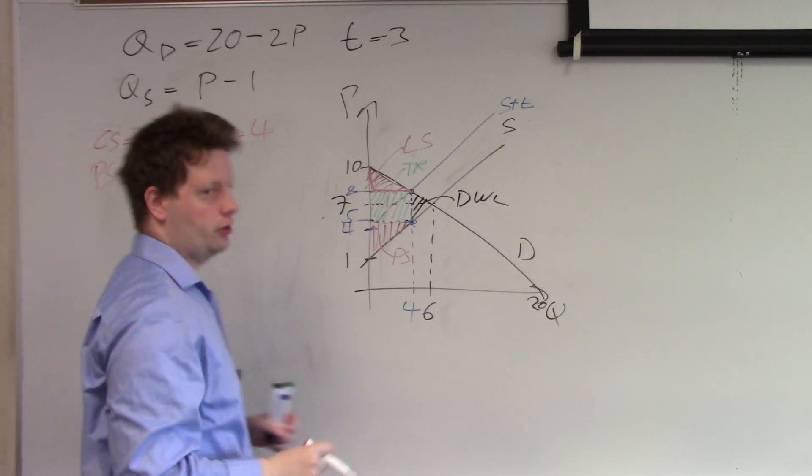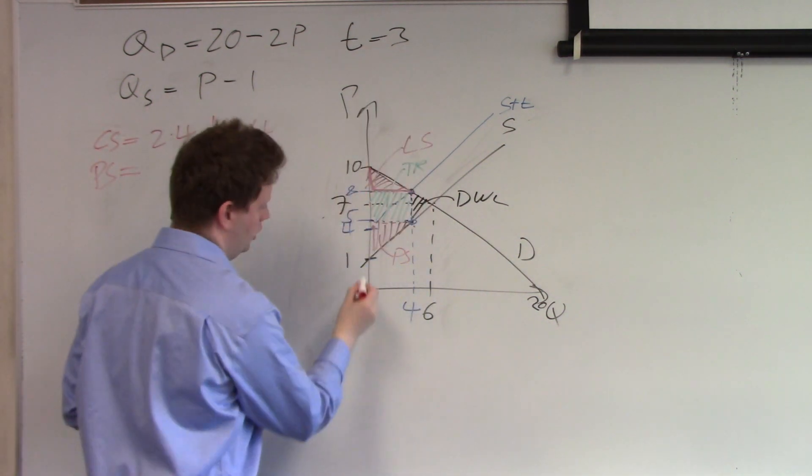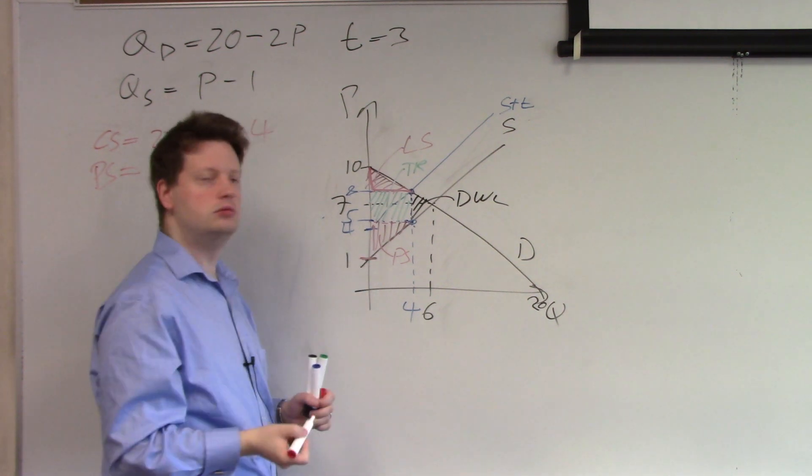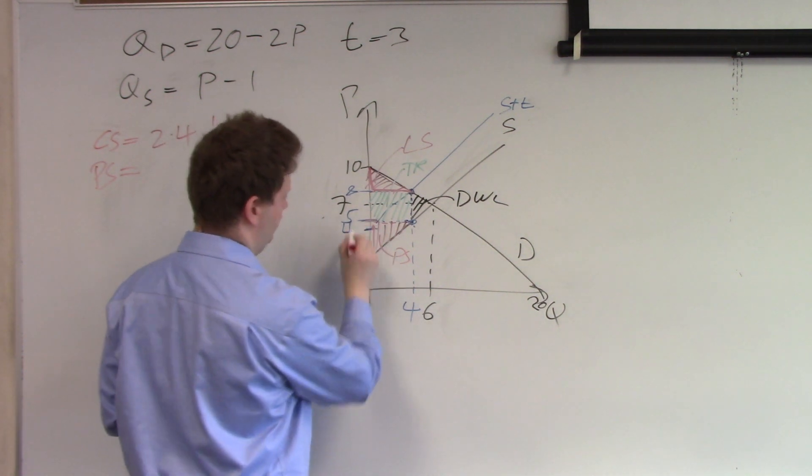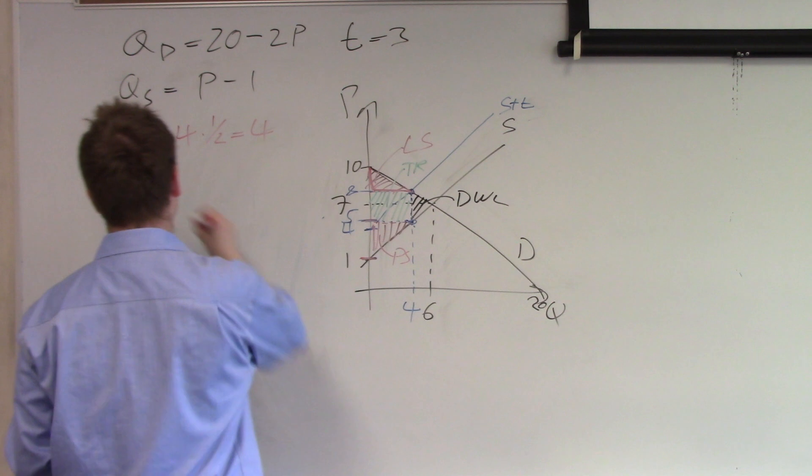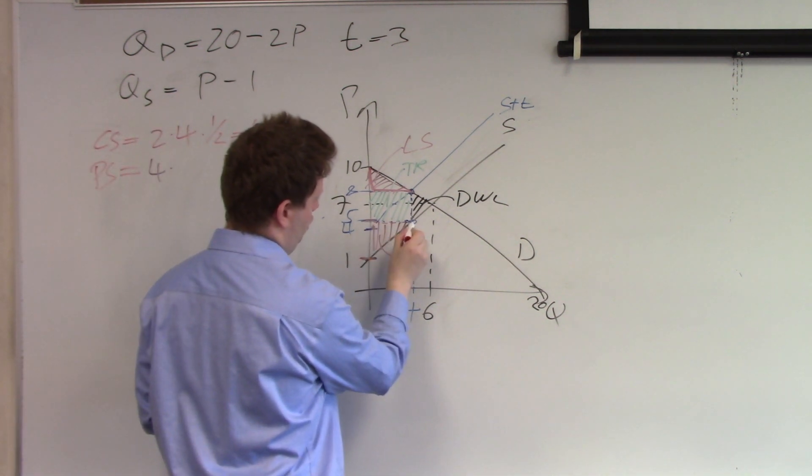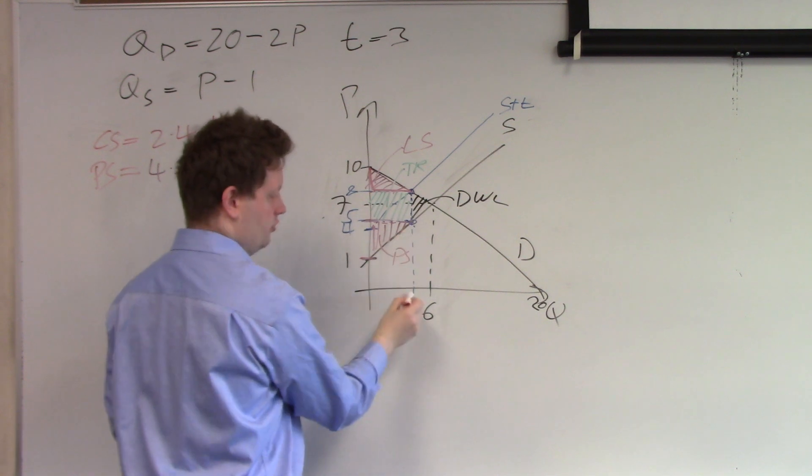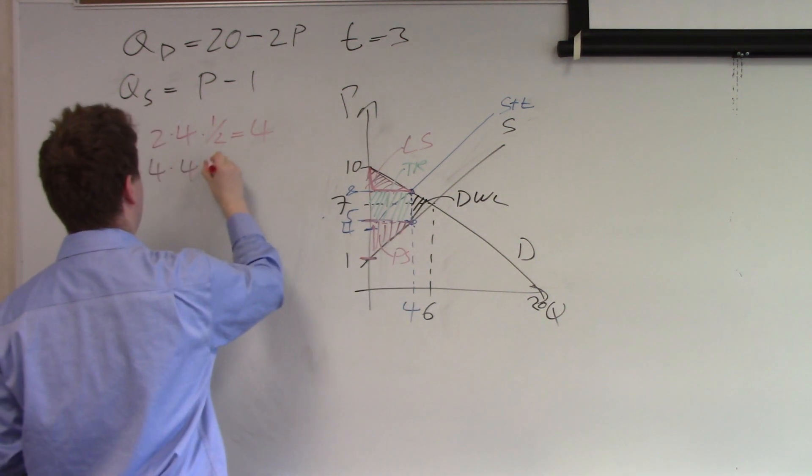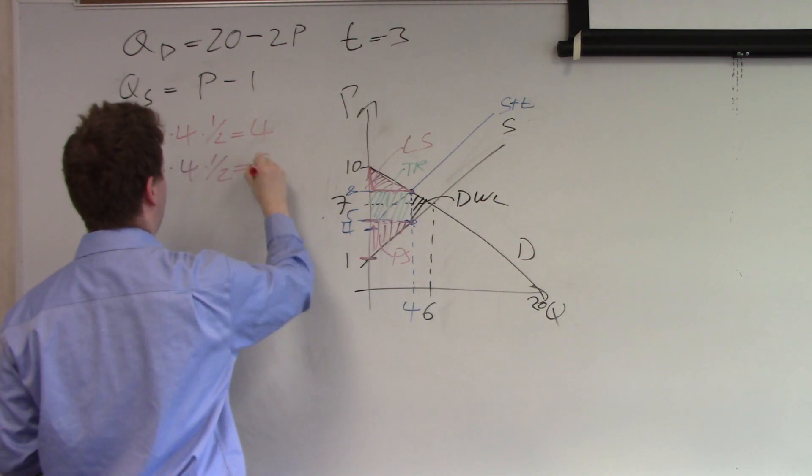Producer surplus, same thing again. We start at 1 here, go all the way up to 5. So that's 4 times from here all the way over here. That's again 4 times 1 half. And we get 8.